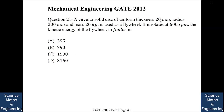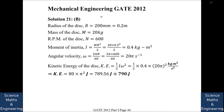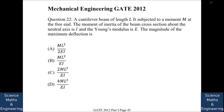A circular solid disk of uniform thickness 20 mm, radius 200 mm, and mass 20 kg is used as a flywheel rotating at 600 rpm. The kinetic energy is found using: moment of inertia I = mR²/2 = 0.4 kg·m². Angular velocity ω = 2πN/60 = 20π rad/s. Kinetic energy KE = ½Iω² = ½ × 0.4 × (20π)² ≈ 792 J.